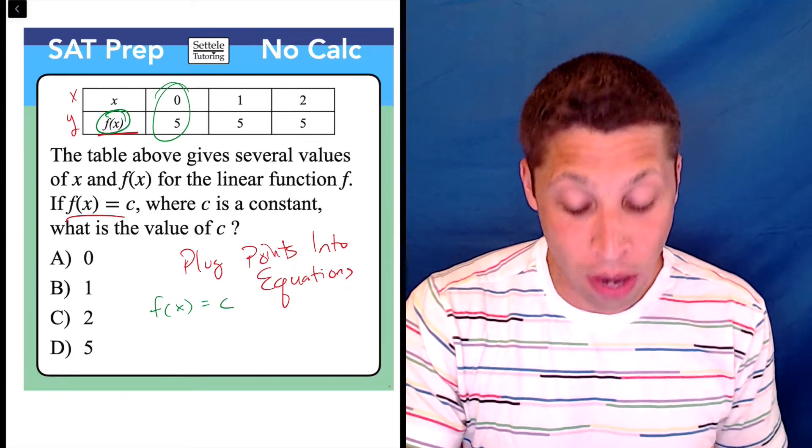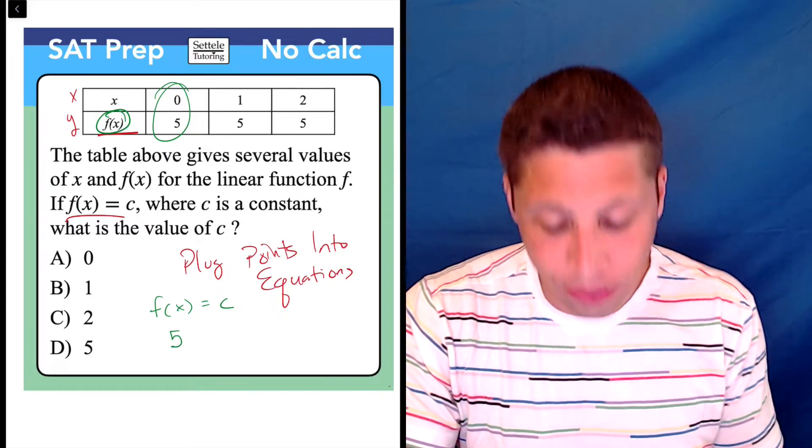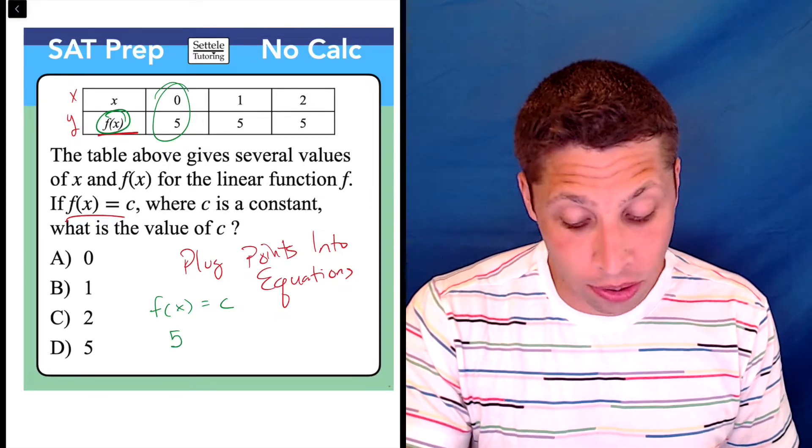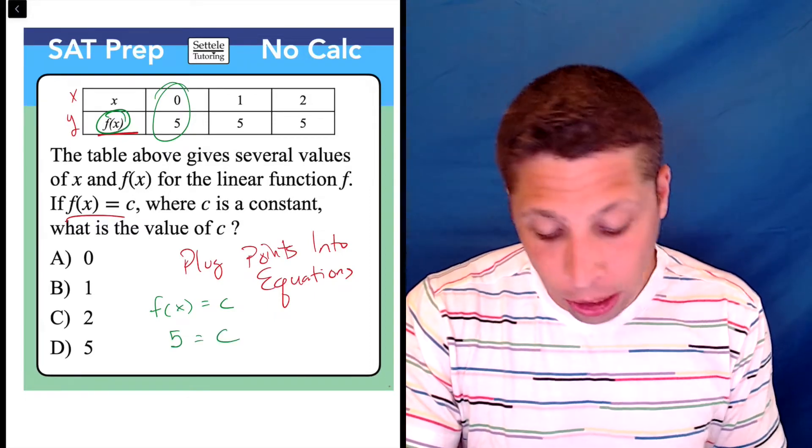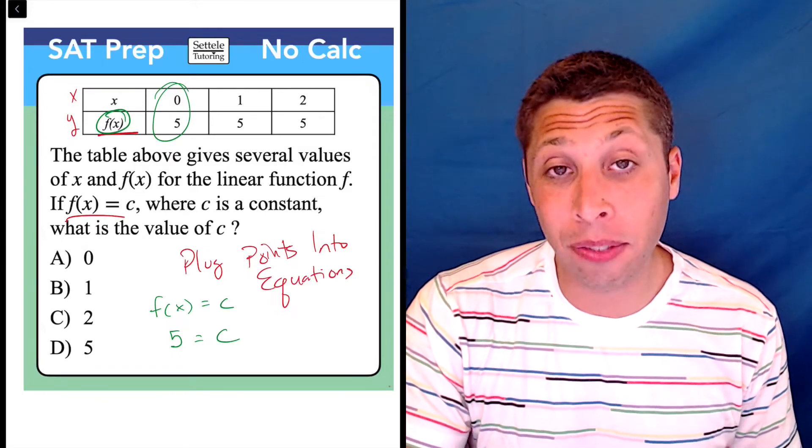and we take the point zero, five, we've got a good place for the five to go. There's no place for the zero, but it doesn't matter because we're just being asked for the value of c, and we've just found that it is five.